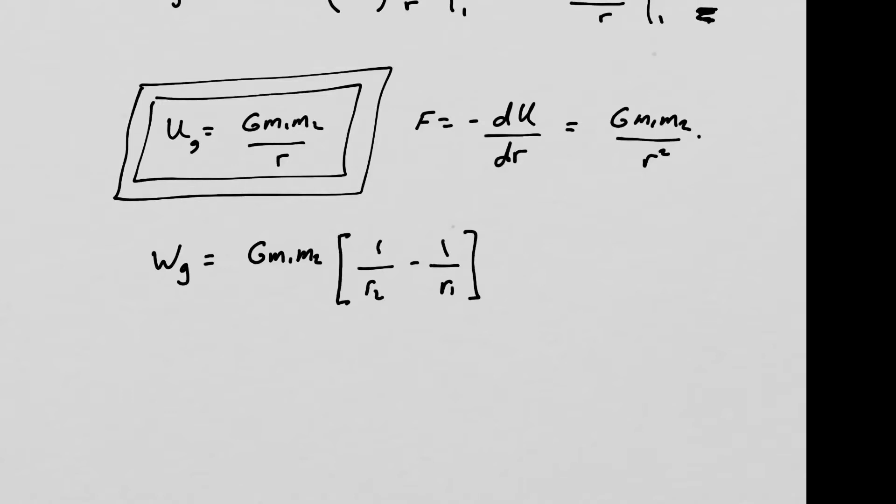That's the work required to move from 2 to 1, since we defined this going in the downward direction. But let's just have some fun with algebra for a second. Let's multiply the first fraction here by an r1 over r1, namely the number 1. And let's multiply the second fraction by an r2 over r2, namely another version of the number 1. Upon doing this, we see that the work done by gravity is g, m1, m2, r1 over r1, r2, minus 1 over r2, r1, r2. And we have an alternate form for this now, which says that g, m1, m2 over r1, r2 times r1 minus r2.